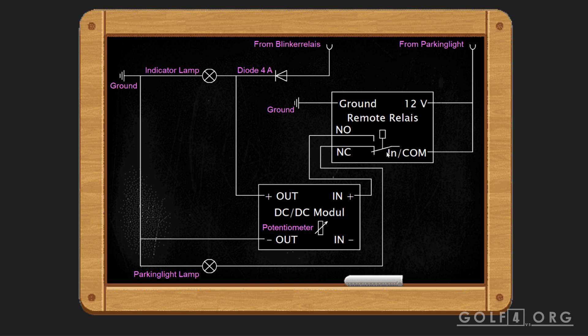If the relay gets energized, NC is not more connected to COM and NO is connected to COM. So in this case, COM goes to NC, from NC to your parking light lamp in your headlights and to ground. Your parking light will light up and your indicator light won't.